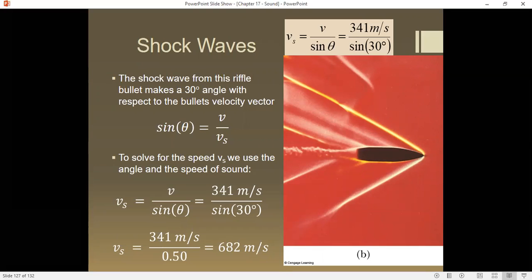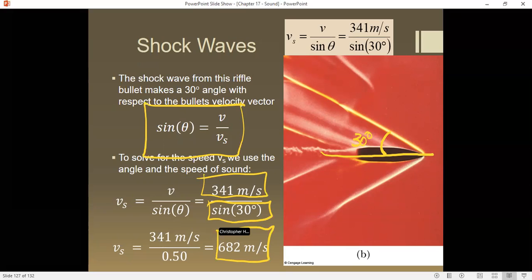Here is a bullet, and this is taken with what's known as a Schlieren photograph. This is about a 30-degree angle. We'll clearly see it's creating this shock wave at about 30 degrees. We start out with this equation right here. You take the sine of 30 degrees. If it's 341 meters per second for the speed of sound, this bullet is traveling about Mach 2, 682 meters per second.